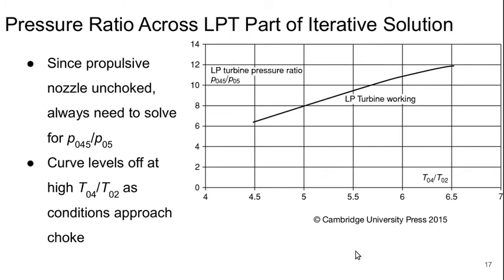Part of the iterative solution process was finding the pressure ratio across the low pressure turbine, shown here versus T0.4 over T0.2. At design, we had something just under 11. Since our propulsive nozzle is unchoked, we always need to solve for this pressure ratio. The curve is starting to level off at high T0.4 over T0.2 values as conditions approach choke, and eventually this would become constant when the flow in the core nozzle chokes.